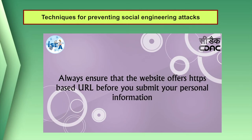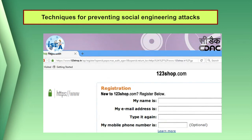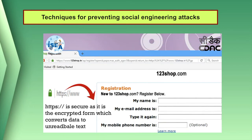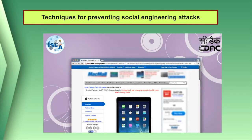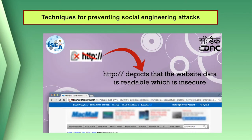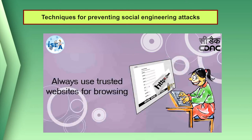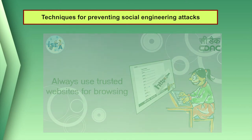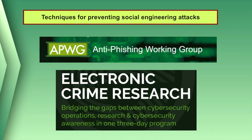Pay attention to the URL of a website. Malicious websites may look identical to a legitimate site, but the URL may use a variation in spelling or a different domain. If you are unsure whether an email request is legitimate, try to verify it by contacting the company directly — do not use contact information provided on a website connected to the request; instead, check previous statements for contact information. Information about known phishing attacks is also available online from groups such as the Anti-Phishing Working Group.